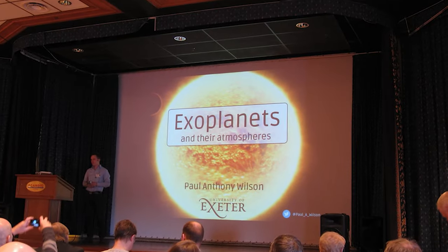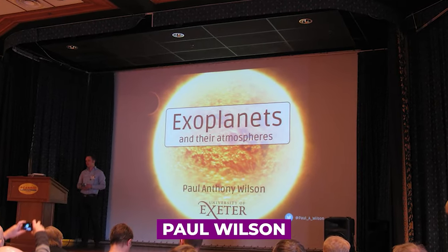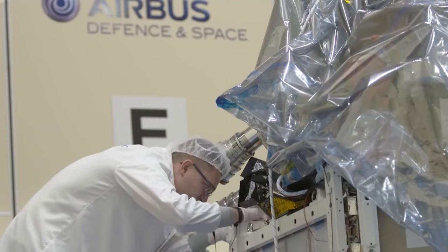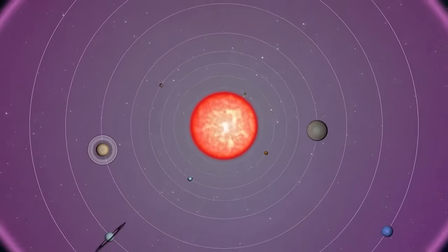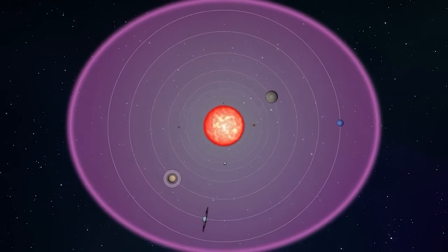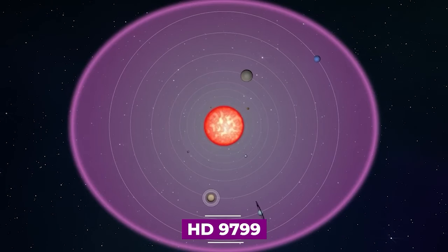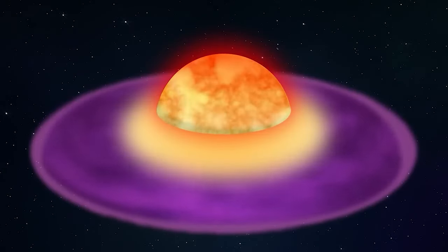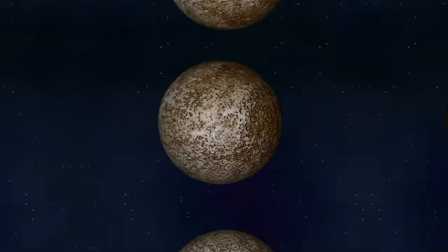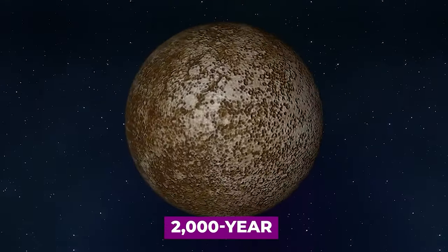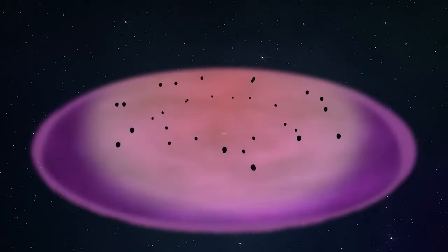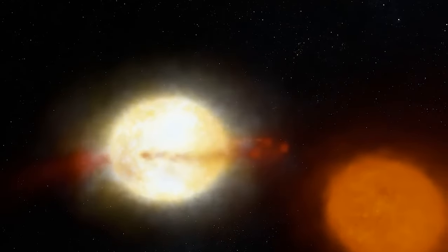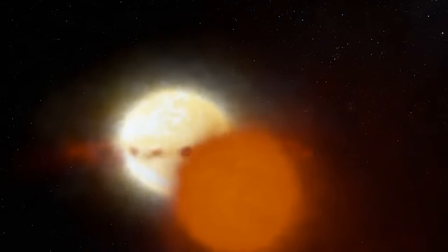According to exoplanetary astronomer Paul Wilson, if disk instability dominates the formation of planets, it should produce a wide number of worlds at large orders. The four giant planets orbiting at significant distances around the star HD 9799 provides observational evidence for disk instability. Fomalhaut b, an exoplanet with a 2,000-year orbit around its star, could serve as an example of a world formed through disk instability, though the planet could also have been ejected due to interactions with its neighbors.